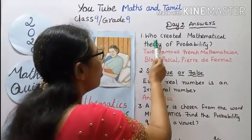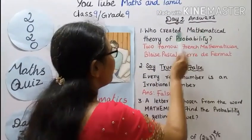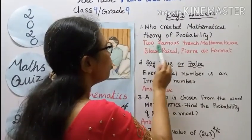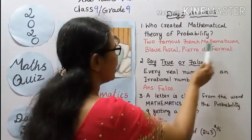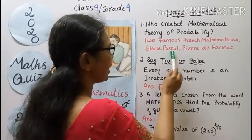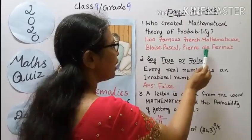First question, who created mathematical theory of probability? Two famous French mathematicians Blaise Pascal and Pierre de Fermat.